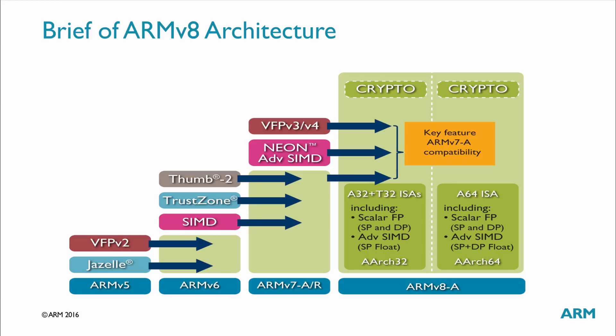In particular, ARMv8A introduces two execution states: AArch32 and AArch64. The AArch32 state is an evolution from ARMv7A, with A32 ARM and T32 Thumb instruction sets and some new instructions. It uses the traditional ARM exception model and has virtual addresses stored in 32-bit registers. The AArch64 state uses new 64-bit general purpose registers from X0 to X30, with new instructions A64, which is a fixed-length 64-bit instruction set.